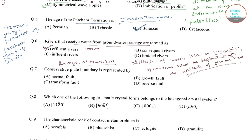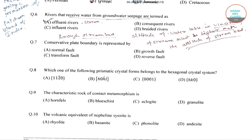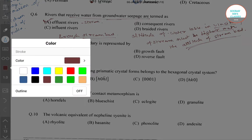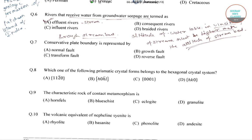Hello students, welcome to Sorosers classes. In this video I will be solving the following questions on geology from JAM 2017. In the previous video I solved up to question number 6, so let's start with question number 7. It is given that conservative plate boundaries are represented by — there are four options: normal fold, transform fold, growth fold, and reverse fold.